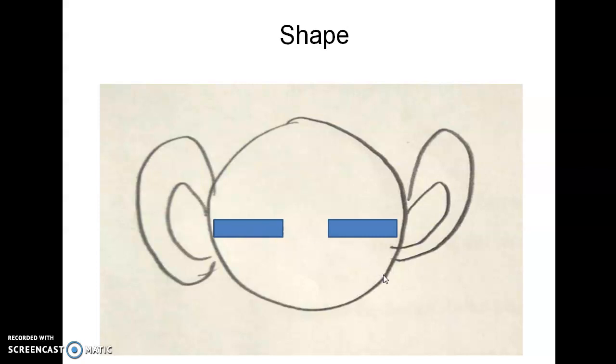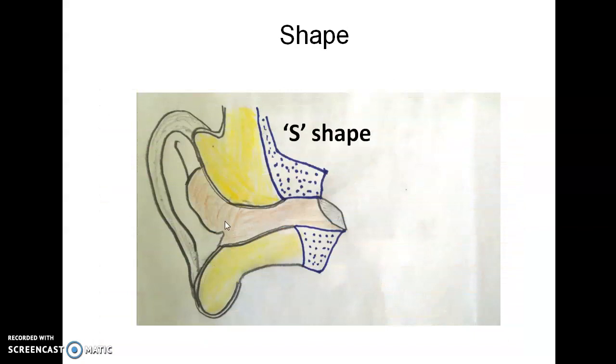The shape of external auditory canal is not straight as we expected. It will be curved like an S-shape curve. Initially, the direction will be from outside to inside.